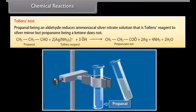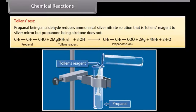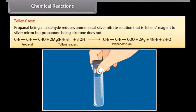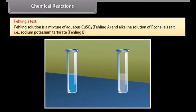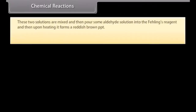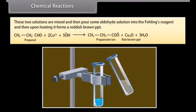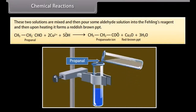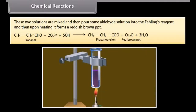Tollens test: Propanol being an aldehyde reduces ammoniacal silver nitrate solution (Tollens reagent) to a silver mirror, but propanone being a ketone does not. Fehling's test: Fehling's solution is a mixture of aqueous copper sulfate (Fehling's A) and alkaline solution of Rochelle's salt, that is sodium potassium tartrate (Fehling's B). These two solutions are mixed and then some aldehyde solution is added to the Fehling's reagent, and upon heating it forms a reddish-brown precipitate.